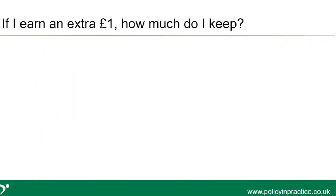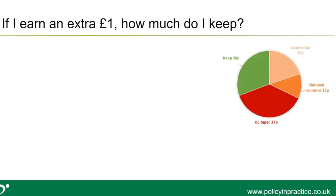Effective marginal tax rates are really trying to answer the question: if I earn an extra pound, how much of that pound do I keep? If we think about someone who might work an extra shift or an extra hour in a given week, they'll have part of their income taken through tax and part taken through the benefit taper if they're receiving benefits, and they'll keep a portion of that. In this example we're talking about someone earning an extra pound and keeping 30p.